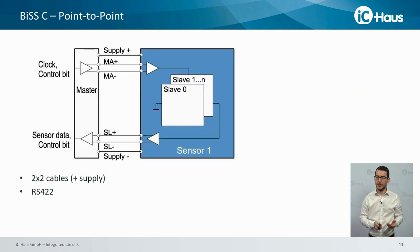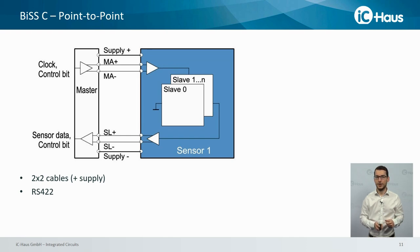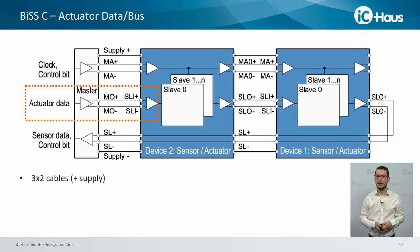There are two topologies available for BiSS. The first is the point-to-point configuration, where one master is connected to one slave device. It requires six wires for communication, and the BiSS slave device can contain several BiSS-C sensors connected in a daisy chain. In the bus configuration, several BiSS slave devices can be connected to one master. To this end, an additional data input line, SLI, is required, which can also be used by a master to send actuator data.